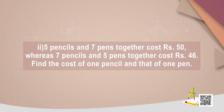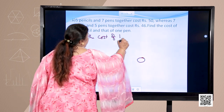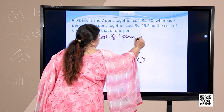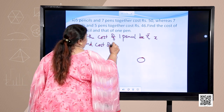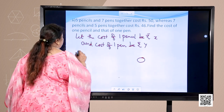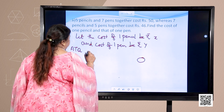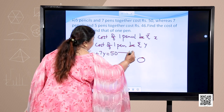I hope you have understood. Let us look into the next question. 5 pencils and 7 pens together cost 50 rupees, whereas 7 pencils and 5 pens together cost 46 rupees. Find the cost of 1 pencil and that of 1 pen. Let the cost of 1 pencil be rupees x and cost of 1 pen be rupees y. According to the question, I get 5x plus 7y is equal to 50. This is the first equation.